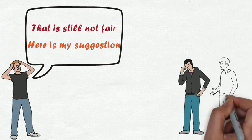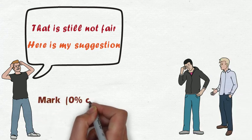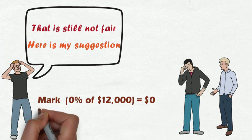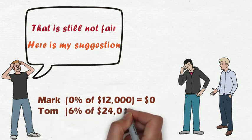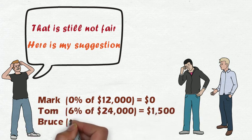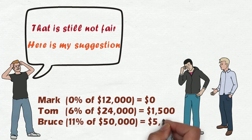Since my income is very low, I don't need to pay anything. Tom will pay $1,500, and Bruce who earns much more than us pays the rest, which is $5,500.